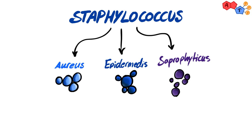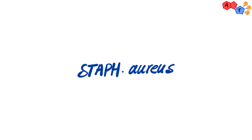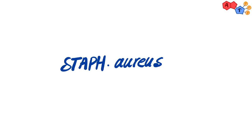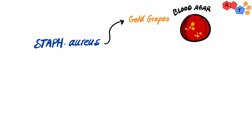Generally speaking, both staph aureus and epidermidis are known to cause nosocomial infections, which are simply hospital-acquired infections. Let's start with staph aureus. Staph aureus, which literally means golden grapes, is how it looks under the microscope, and it looks golden in blood agar.